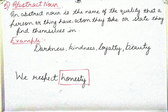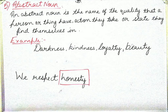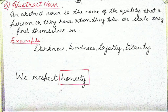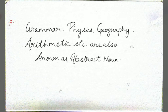The fifth type of noun is abstract noun. An abstract noun is the name of the quality that a person or thing has, the action they take, or the state they find themselves in. For example: darkness, kindness, loyalty, beauty, honesty. We respect honesty — honesty is the name of a quality, that is why we call it abstract noun. Grammar, physics, geography, arithmetic, etc. are also known as abstract nouns. These types of subjects are also abstract nouns — please remember them.